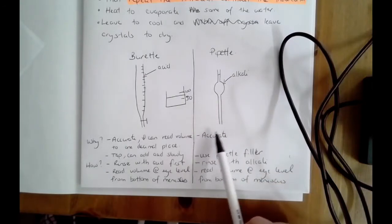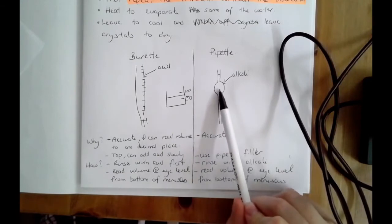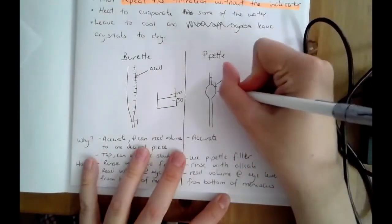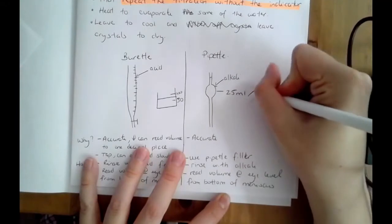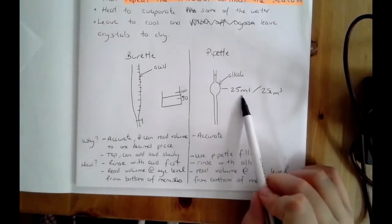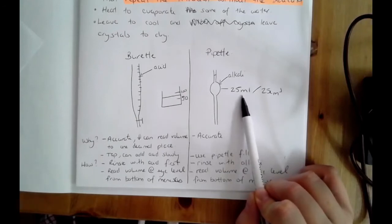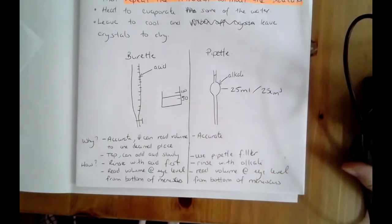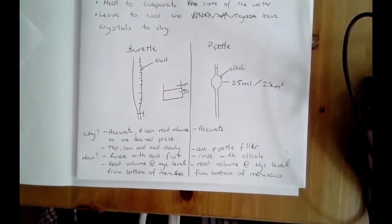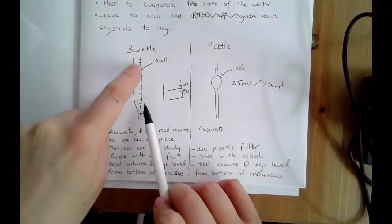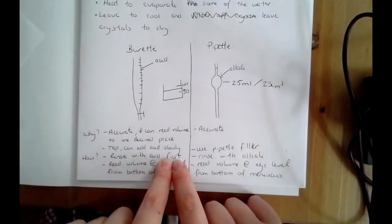With the pipette, it's a very accurate piece of glassware with only one line on it. Pipettes are typically used to measure out 25 mL — you can get 20 mL or 25 mL pipettes — and they are calibrated to measure that volume incredibly accurately. That's why we use it for the alkali: so we know exactly how much alkali is in our conical flask.